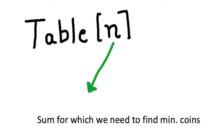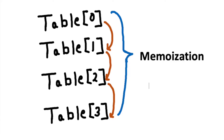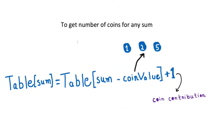We will use memoization to compute the number of coins for any sum. We take an array called 'table', of size equal to the target sum, initialized with the max integer value. We iterate over sums from 1 upward. The key recurrence is: total coins for a given sum equals table[sum minus coin_value] plus 1 — that is, the minimum coins needed for the remaining sum after subtracting the current coin's value, plus 1 for the coin itself. This applies for coin denominations 1, 2, and 5.